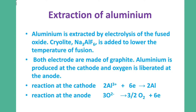Cryolite, Na3AlF6, is added to lower the melting point and the temperature of fusion. Both electrodes are made of graphite — the cathode graphite and the anode graphite.